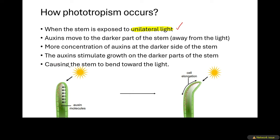Remember that auxins are produced at the tip of the stem. When the stem is exposed to light from one side — represented here by the sun — the auxins will move to the darker part of the stem. They move away from the light. Auxins were produced at the tip but they are moving away toward the darker part of the stem.